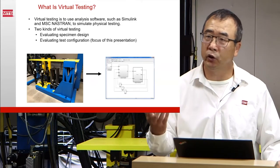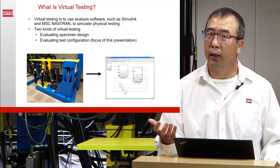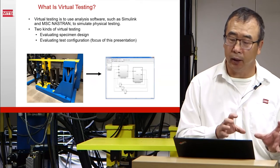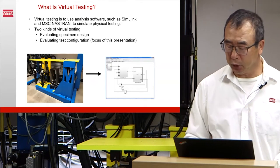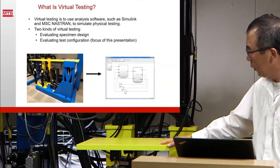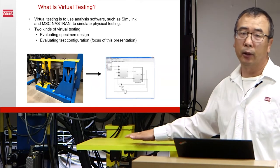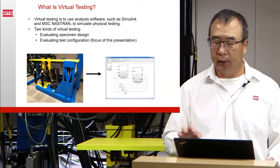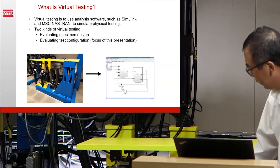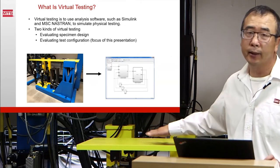Another kind of virtual testing focuses on testing itself — how to set up your test properly, how to conduct the test properly, efficiently, and accurately. The virtual testing I'm going to talk about is focused on the latter: how to set up your physical test. For example, in this picture, on the left is a four-channel test system with a plate simulating an airplane wing and four actuators. On the right there's a simulation model of the whole system, including actuators, servo valves, the specimen, and the controller.